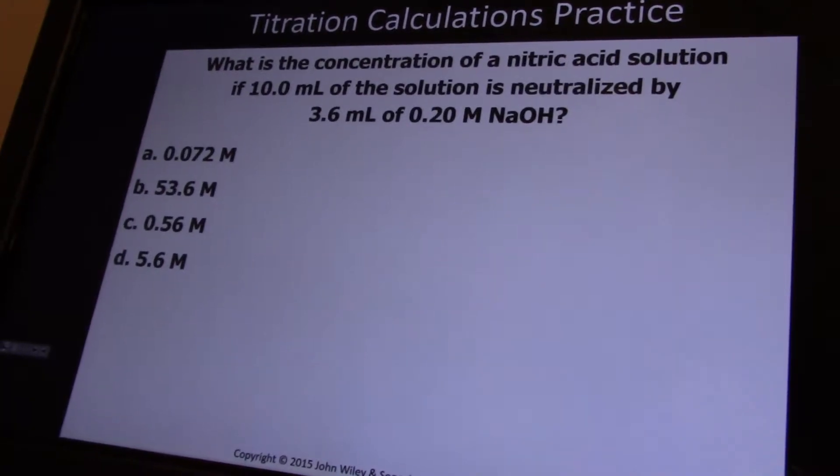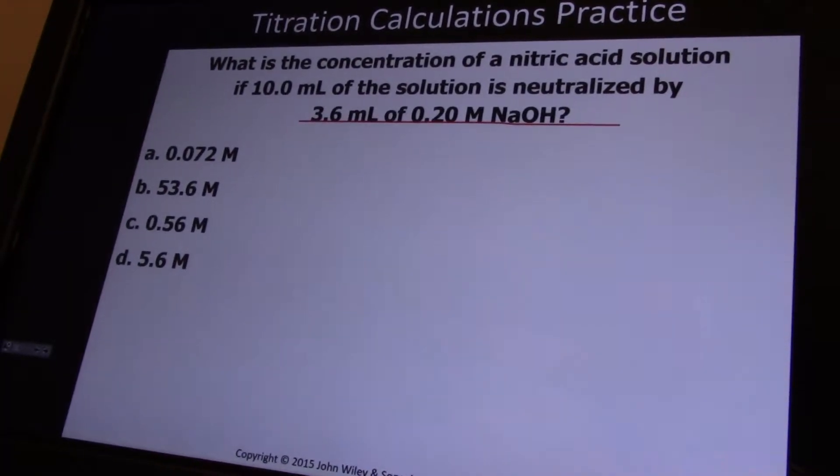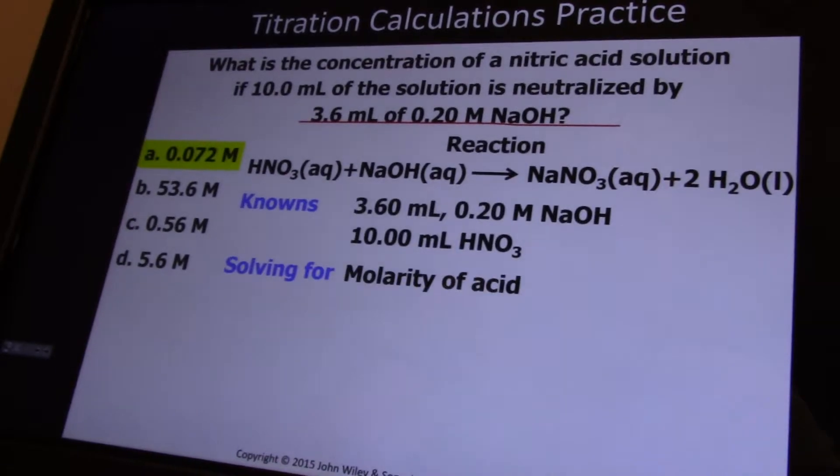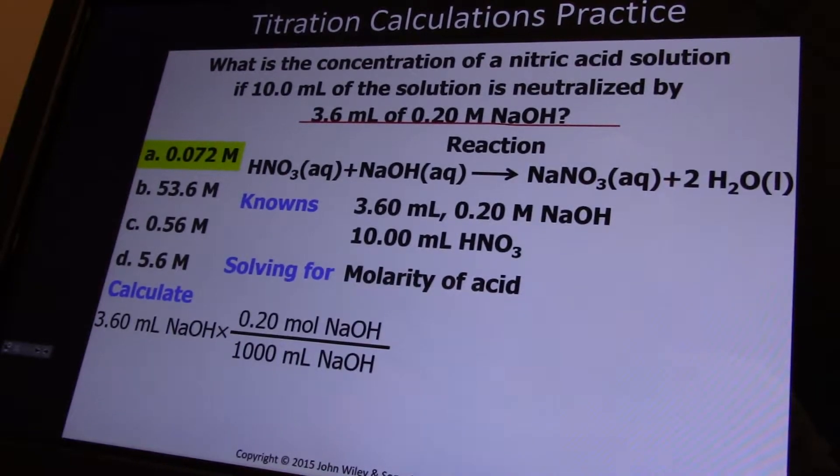The solution is neutralized by 3.6 milliliters of 0.2 molar sodium hydroxide. Start with the known. Convert to liters: 0.0036 liters times 0.2 moles per liter. You can switch between liters and milliliters and get the same result.